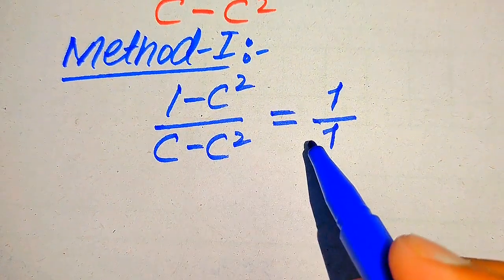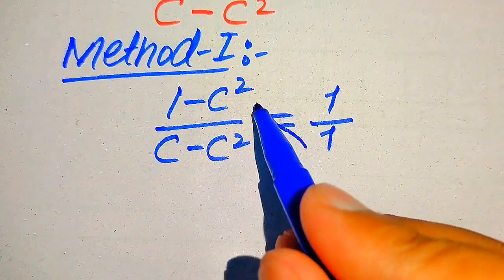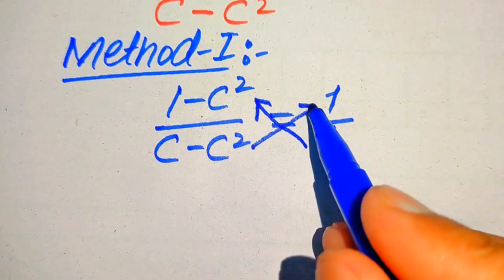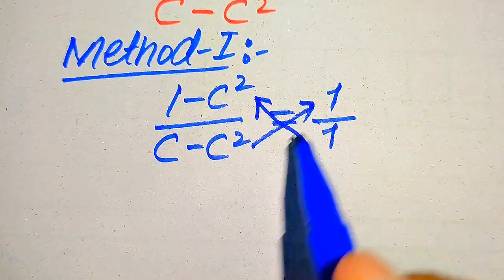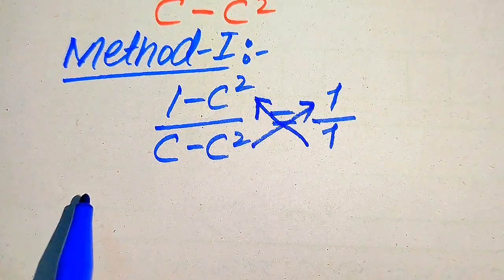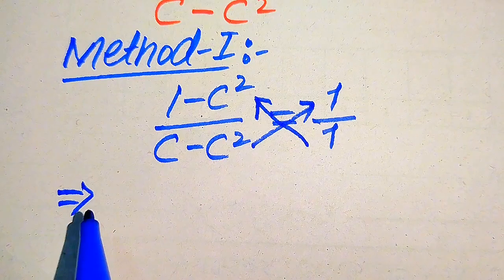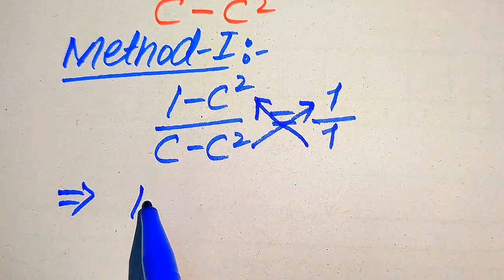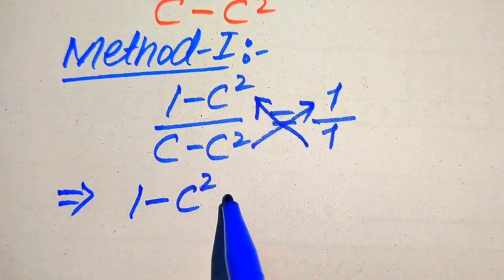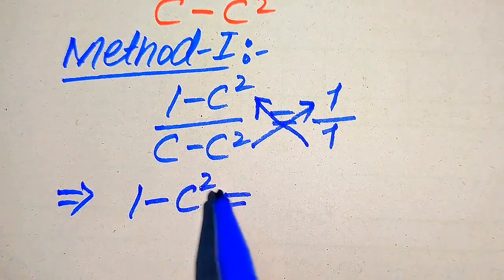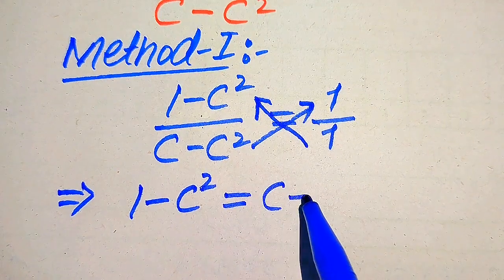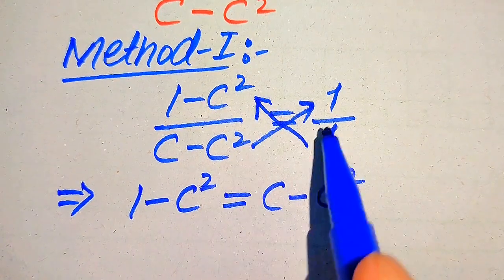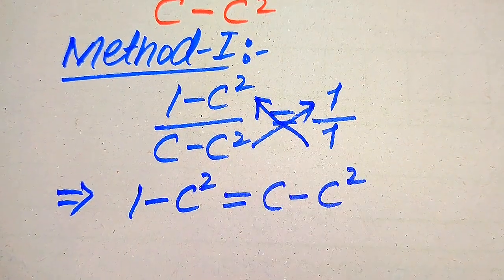In the next step we need to cross multiply the terms. We multiply 1 with this value and we multiply 1 with this term. After cross multiplication we get 1 minus C square is equals to C minus C square multiplied by 1.